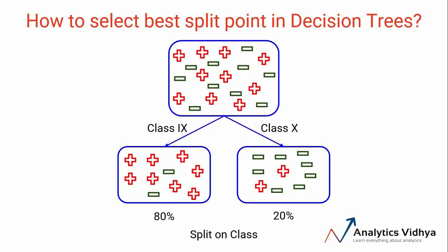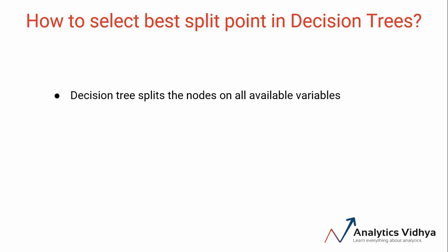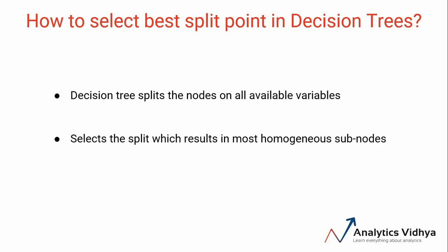That is how the decision tree algorithm also works — it first splits the nodes on all the available variables and then selects the split which results in the most homogeneous sub-nodes. Homogeneous here means having similar behavior with respect to the problem that we have. If the nodes are entirely pure, each node will only contain a single class and hence they will be homogeneous. So intuitively, more the purity of the nodes, more will be the homogeneity.